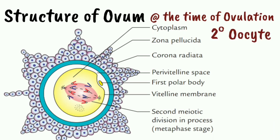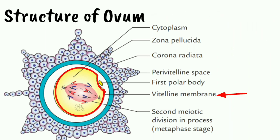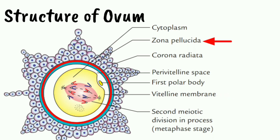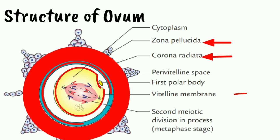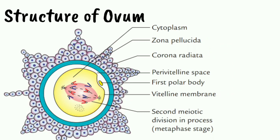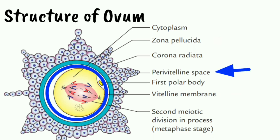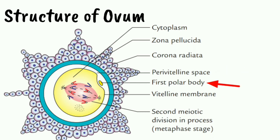At the time of ovulation, the ovum — which is the secondary oocyte — has a covering called the vitelline membrane. Outside the vitelline membrane is the zona pellucida, and outside the zona pellucida are the cells of the corona radiata. These three are the membranes the sperm has to penetrate during fertilization. Between the vitelline membrane and the zona pellucida is a perivitelline space, where the first polar body lies.